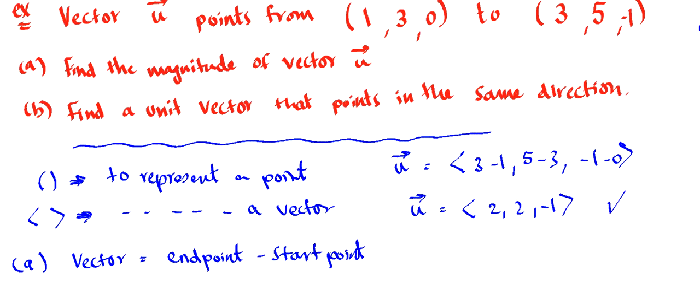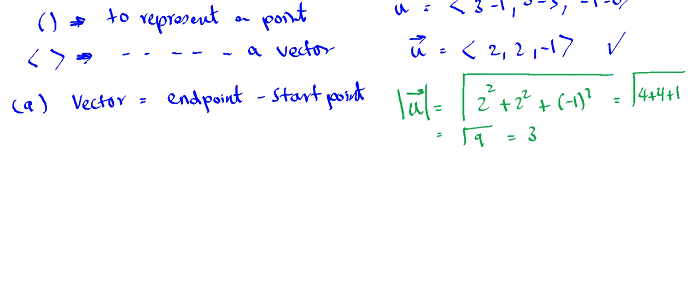Now if I want to find the magnitude of vector u, just use the formula from the last video. Square root of each component squared, so 2 squared plus 2 squared plus negative 1 squared, which is the square root of 4 plus 4 plus 1, square root of 9, which is equal to 3. So the magnitude of the vector u is equal to 3.